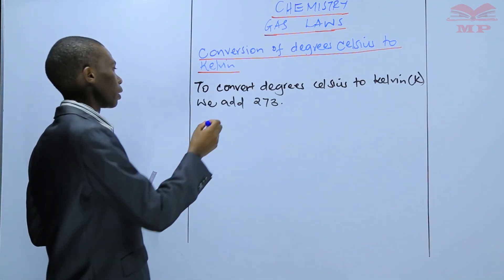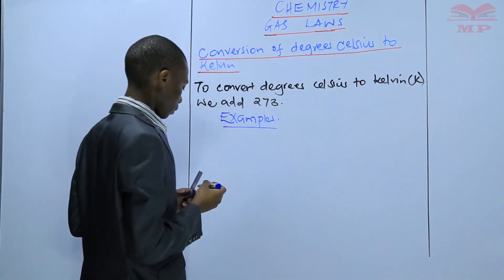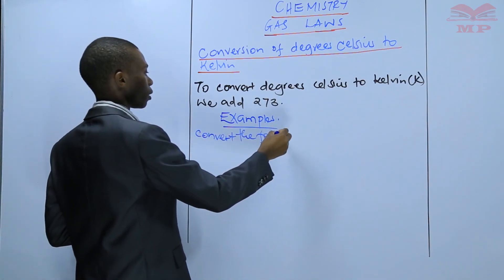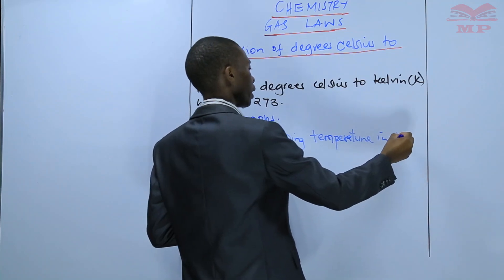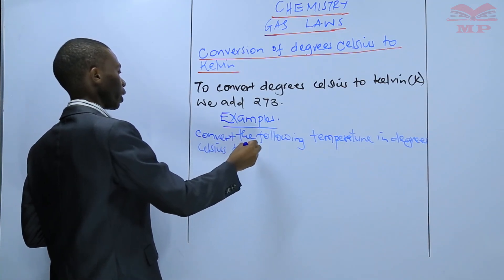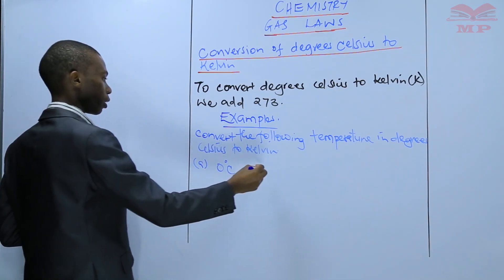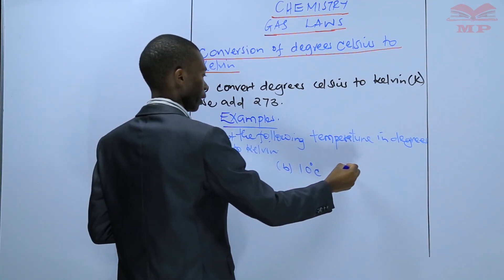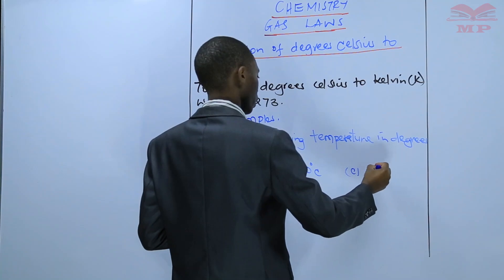I want us to do examples. Convert the following temperatures in degree Celsius to Kelvin. A: 0 degree Celsius. B: 10 degree Celsius. C: 40 degree Celsius.